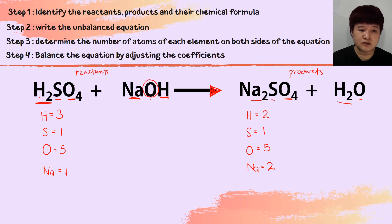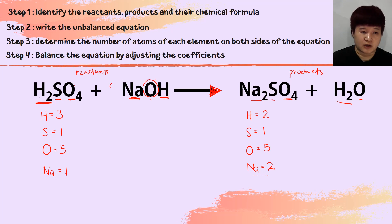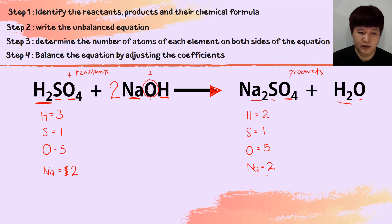Hydrogen also exists in multiple compounds (H₂SO₄, NaOH, and H₂O), so hydrogen will also be balanced last. Sodium only exists in NaOH on the reactant and in Na₂SO₄ on the product, so we balance sodium first. On the product I have 2 Na, so on the reactant I need 2 Na. I put a coefficient of 2 in front of NaOH, changing Na from 1 to 2.